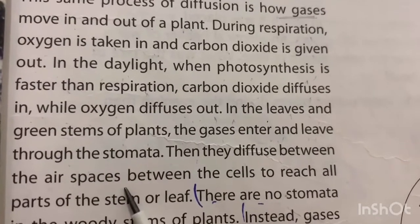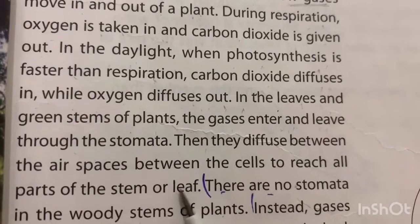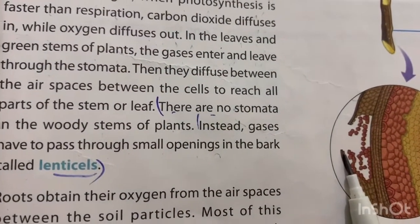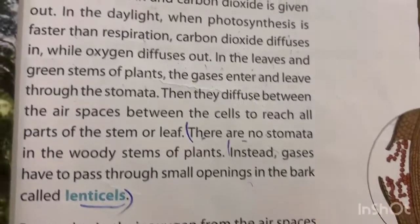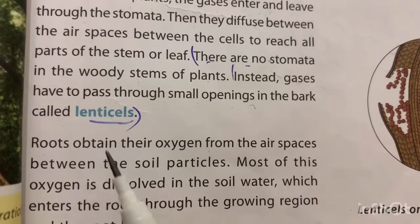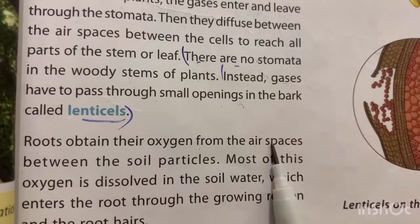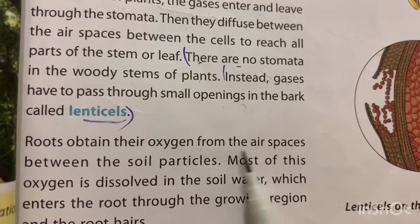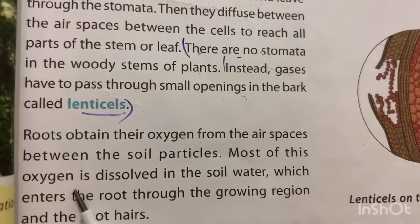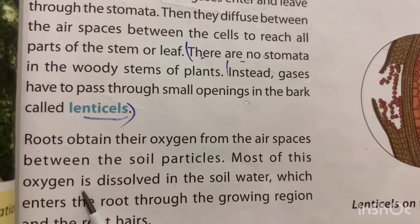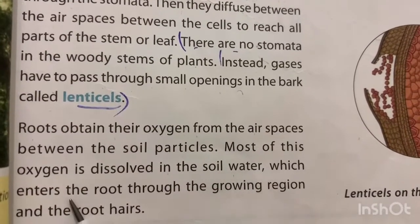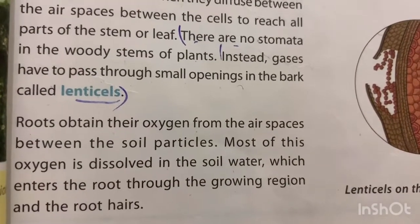Gases diffuse between the air spaces between the cells to reach all parts of the stem through the lenticels — the small openings in the bark. The roots obtain their oxygen from the air spaces between the soil particles. Most of this oxygen is dissolved in the soil water, which enters the root through the growing region of the root hairs.